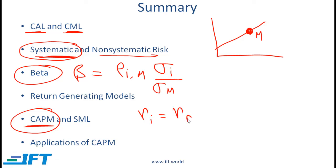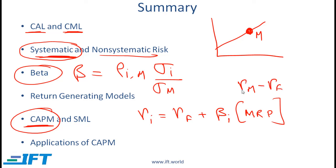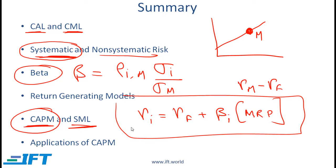CAPM is critical: it allows us to compute the expected return on a security given its level of systematic risk. Expected return equals the risk-free rate plus beta times the market risk premium, where the market risk premium is the return on the market minus the risk-free rate. The Security Market Line is a graphical representation of the CAPM formula. The biggest application is computing the required return given the level of risk, and we also use these concepts to evaluate portfolio managers with our four performance measures.